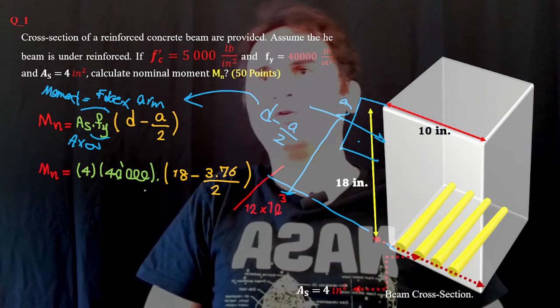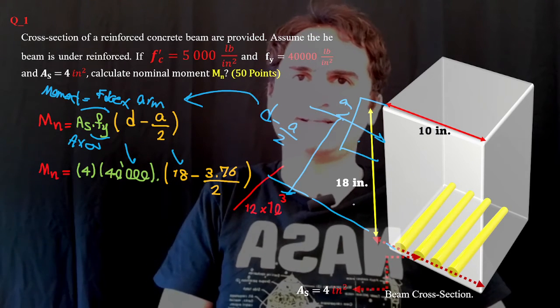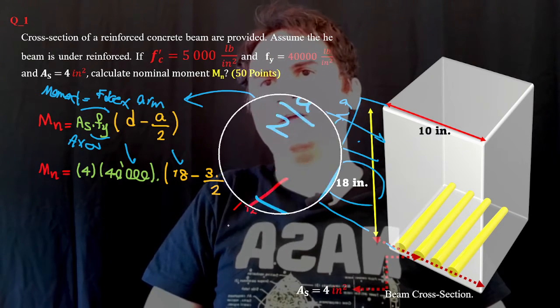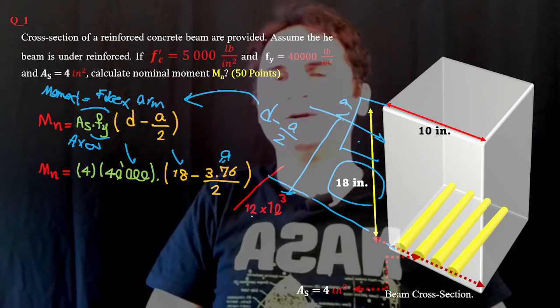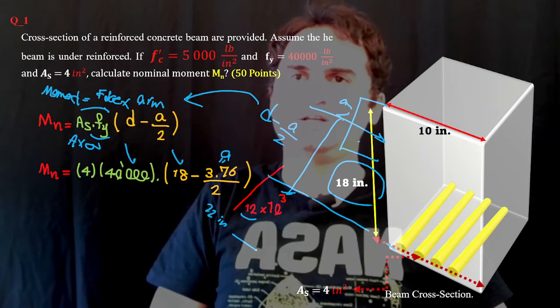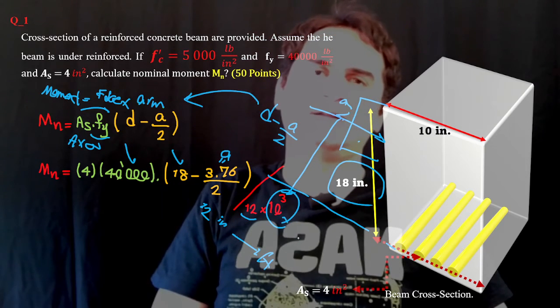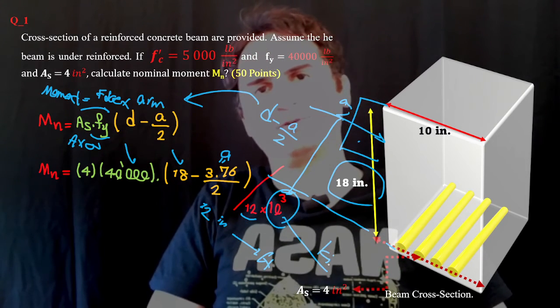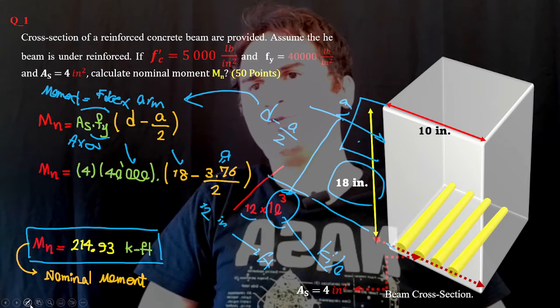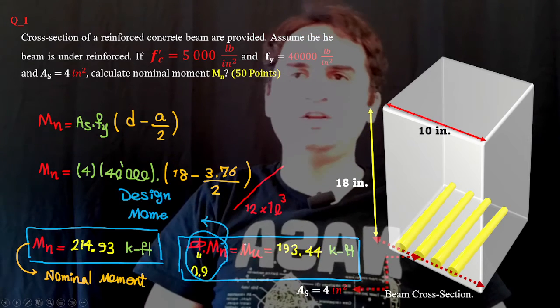So moment M_n equals A_s, which is 4, times f_y, which is 40,000, times d, which is 18, minus a over 2, which is 3.76 over 2. Divide by 12 to convert inches to feet, and by 1,000 to report in kips. This gives us a nominal moment capacity of 214.93 kip-feet.